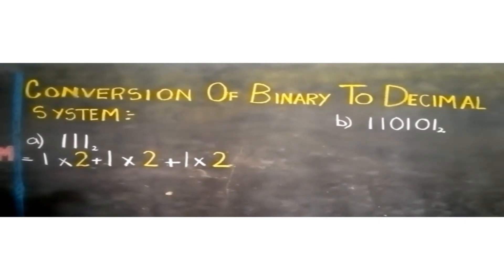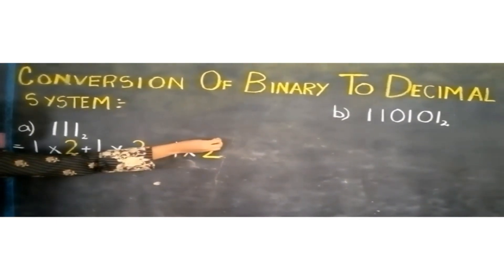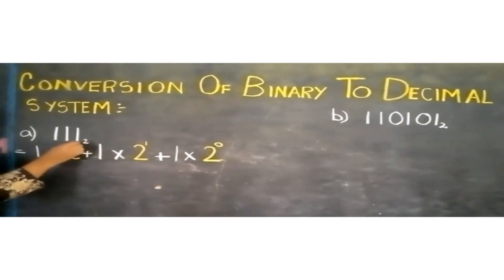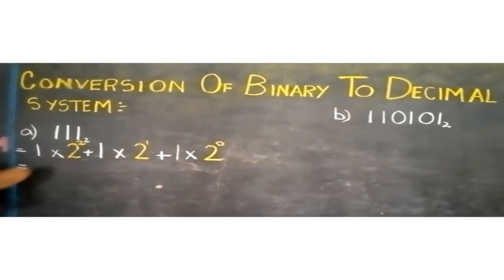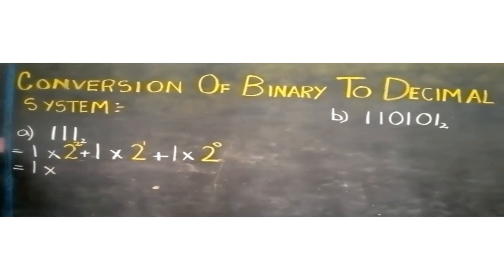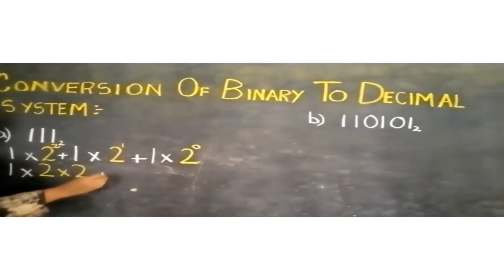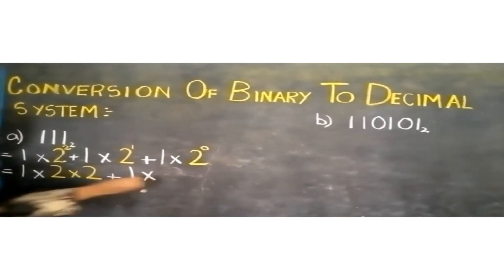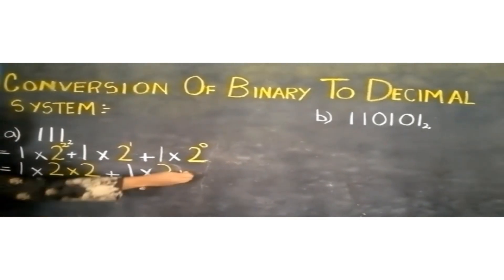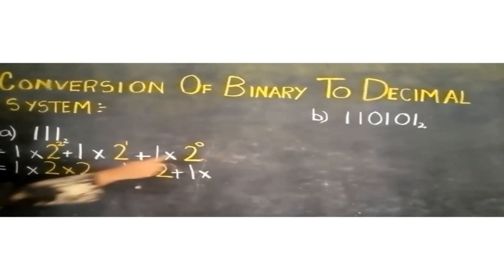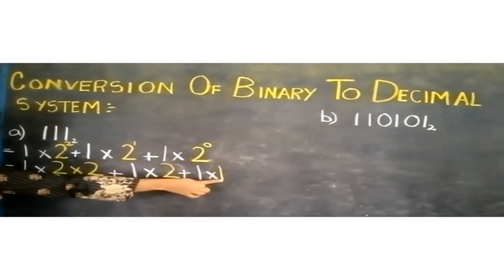The second step is that we will write the power from the right-hand side on the number 2, starting from zero: 0, 1, 2. The third step is we will solve the powers. One multiplied by 2 raised to the power 2 means we will write 2 two times and multiply. Plus 1 multiplied by 2 raised to the power 1 means we write it only one time. Plus 1 multiplied by any number raised to the power 0 is equal to 1, so 2 raised to the power 0 will be equal to 1.